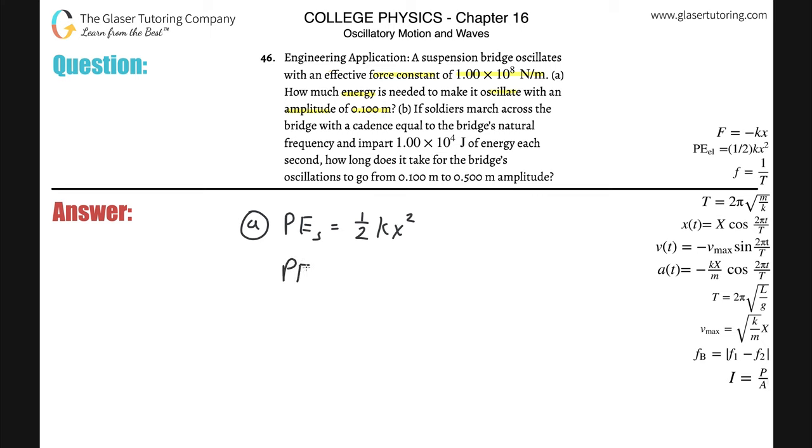So to find part A, it's very simple. It's simply just a plug and chug. So the force constant here is going to be 1 times 10 to the 8 N per meter. Those are the correct units. The displacement from equilibrium, which is known as the amplitude, is 0.1 meters. That's in the correct unit. That's squared.